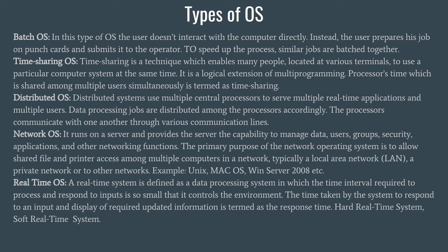Lastly, Real-Time OS. A real-time system is defined as a data processing system in which the time interval required to process and respond to inputs is so small that it controls the environment. The time taken by the system to respond to an input and display the required updated information is termed the response time. There are two types of real-time OS: hard real-time systems and soft real-time systems.